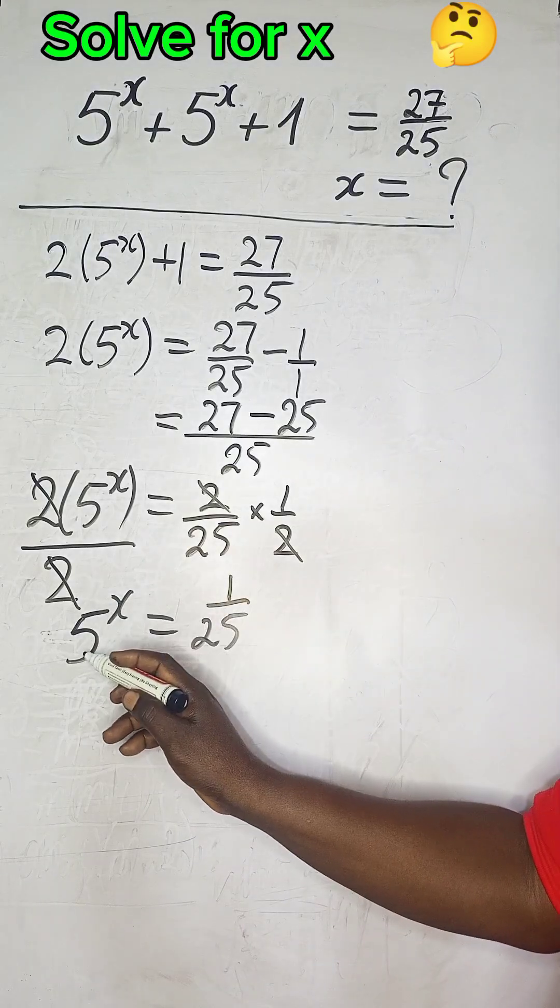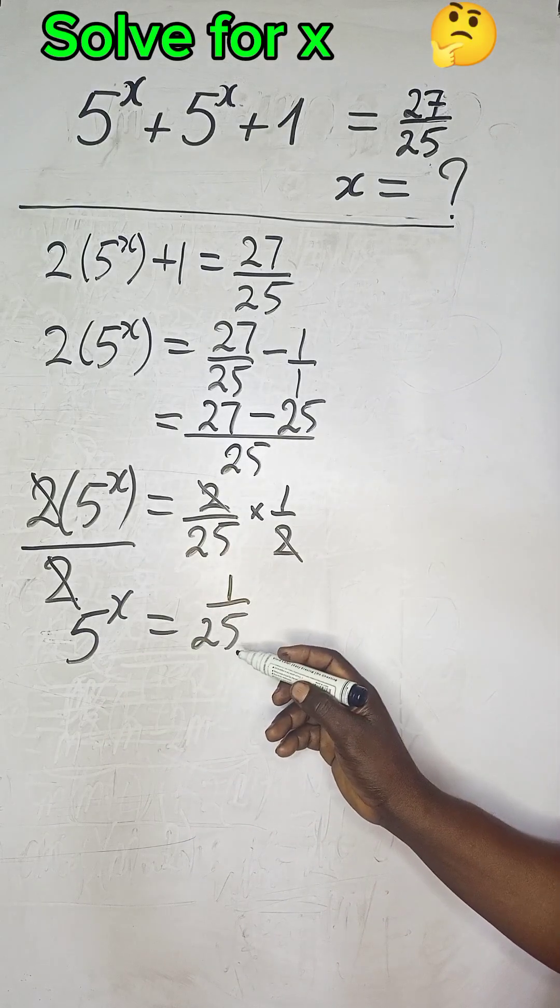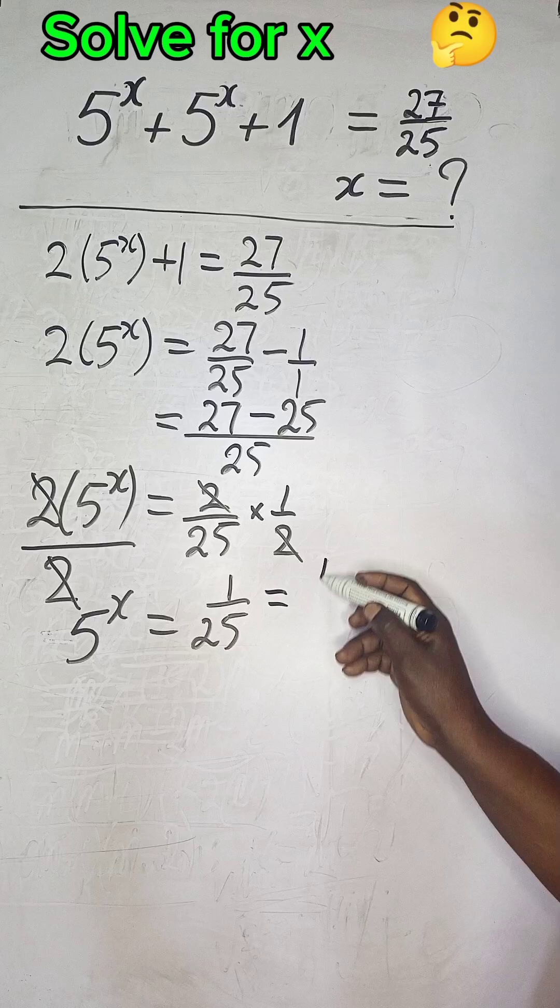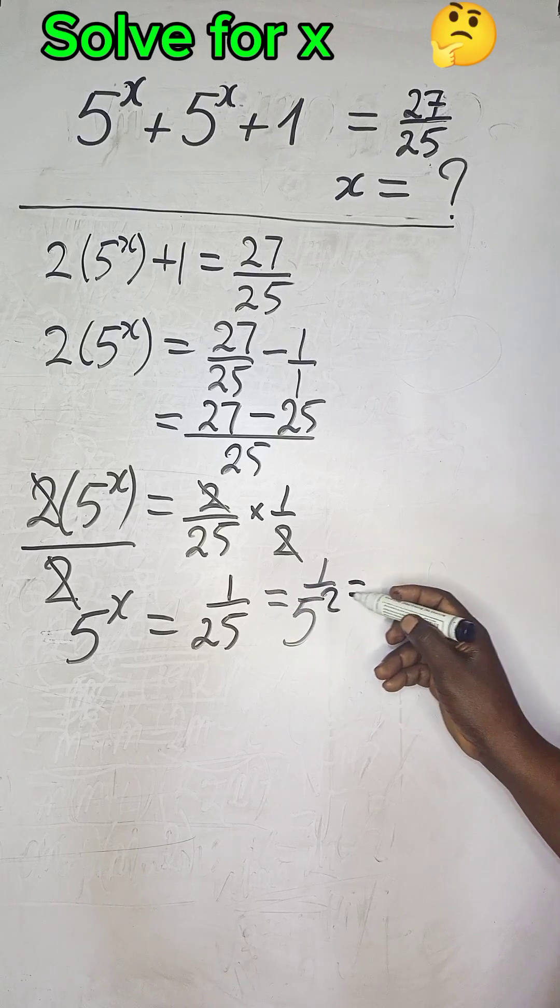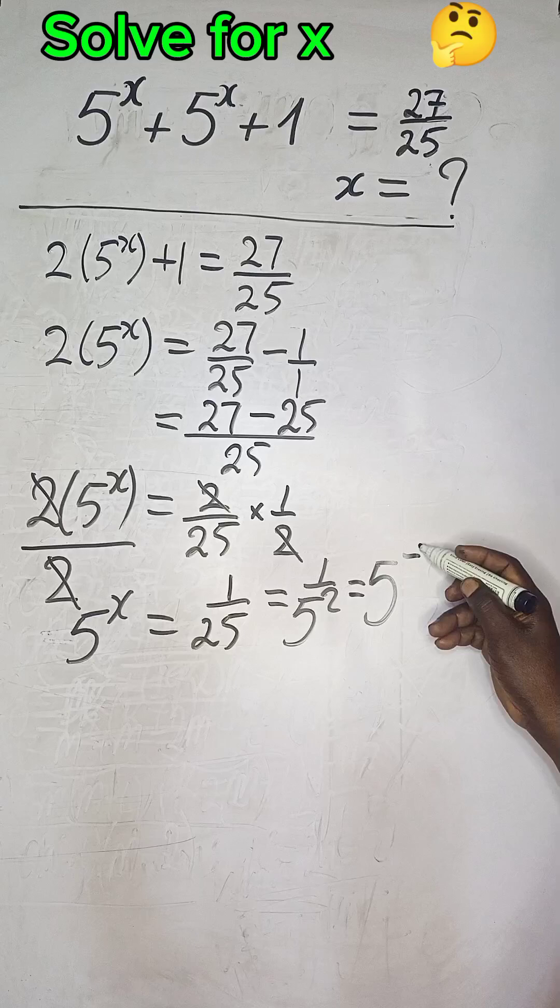This index expression has the base 5. Can we change 25 to an index number with base 5? 25 is the same as 5 squared. If we apply our laws of indices, this is simply 5^(-2).